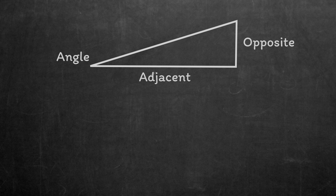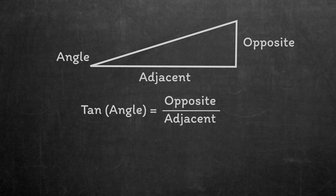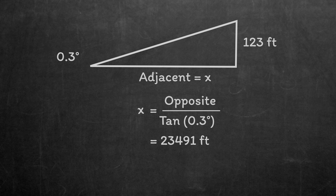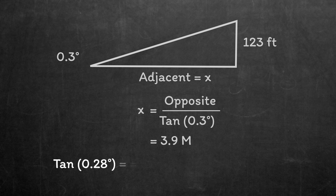From trigonometry, tan of an angle equals opposite over adjacent. The angle is 0.3 degrees, the opposite is 123 feet, and the adjacent is the unknown we're hoping to find. We can rearrange to get x equals 123 divided by tan of 0.3 degrees, which equals 23,491 feet. There are 6,076 feet in a nautical mile, so this gives us 3.9 nautical miles in total. Do bear in mind that the angle must be precise — a reasonable sextant should give an accuracy of 0.1 minutes. If this angle had been one minute different, say 17 minutes instead of 18, the resultant distance would have been 4.1 miles instead of 3.9.